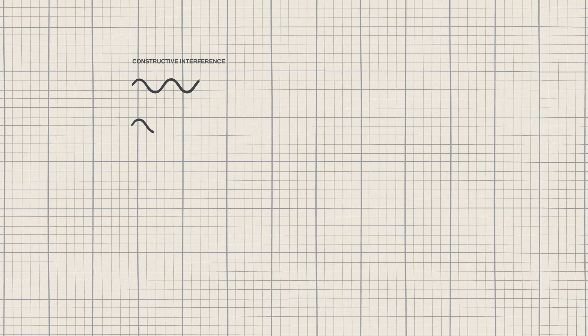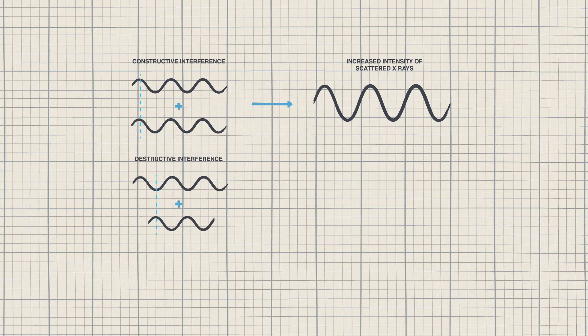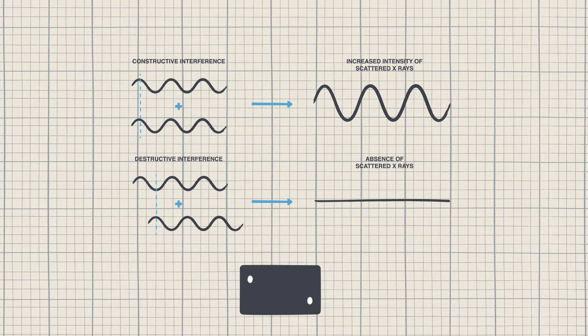In a diffraction experiment what we measure on the detector is how the diffracted x-rays interfere with each other. Constructive interference leads to bright spots or reflections whereas destructive interference does not. This gives us our diffraction pattern composed of a range of spots.